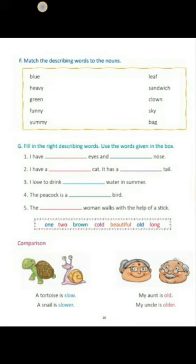Next, some describing words are given in a box — you have to fill in the right describing word in the blanks. In the first sentence, you have to write: 'I have two eyes and one nose.' In the second, third, fourth, and fifth sentences, you have to fill in with the right describing word.